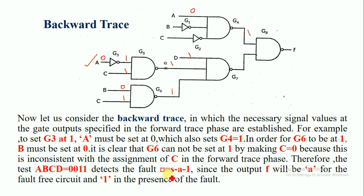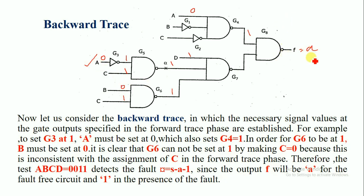This pattern detects the stuck-at-1 fault at the output of gate G5, since the output F for the fault-free circuit equals input A. That is, if A equals 0 then output F is also 0, and if A equals 1 then output F is also 1.